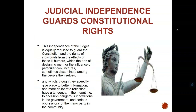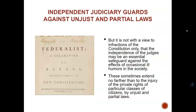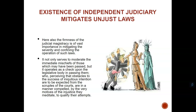Judicial independence guards constitutional rights. Think of the judiciary as a protector. There are rights in the Constitution, and if these rights get violated, it's the judiciary that should right the wrong - that's the point of them. An independent judiciary guards against unjust, impartial laws. That is the hope. That was the persuasion taking place in Federalist 78. In 78, it says the existence of an independent judiciary will mitigate unjust laws.